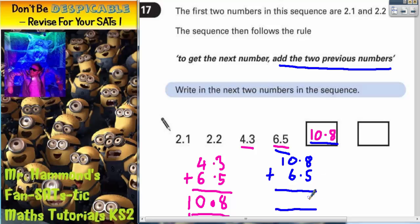8 and 5 is 13. Put your 3 in. Carry your 1. 0 and 6 is 6. Plus that 1 is 7. And then the 1 here is just on its own. There's nothing to add to it, so it's just a 1. So the final answer in the final box is 17.3. Don't forget your decimal point.